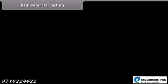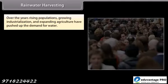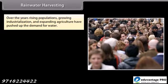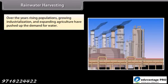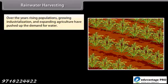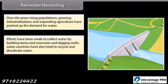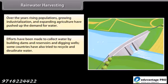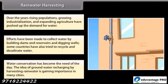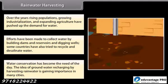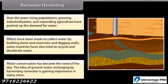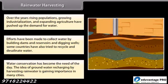Rainwater Harvesting. Over the years, rising populations, growing industrialization and expanding agriculture have pushed up the demand for water. Efforts have been made to collect water by building dams and reservoirs and digging wells. Some countries have also tried to recycle and desalinate water. Water conservation has become the need of the day, and the idea of groundwater recharging by harvesting rainwater is gaining importance in many cities.